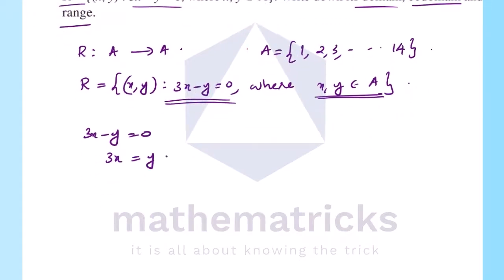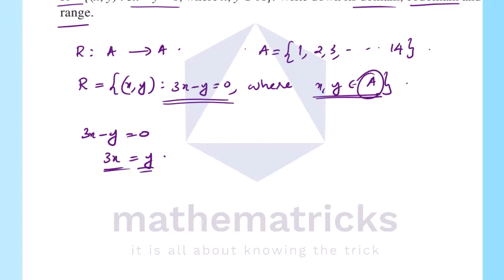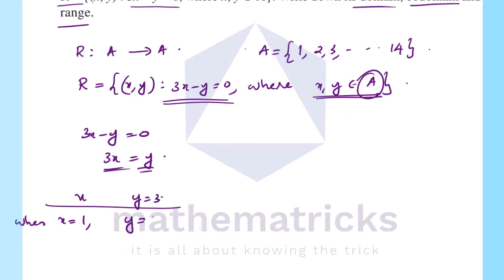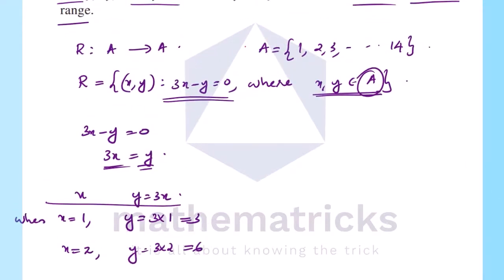We substitute values into A. The set A has 14 values. When x equals 1, y equals 3×1 equals 3. When x equals 2, y equals 3×2 equals 6. We continue substituting x values up to 14.